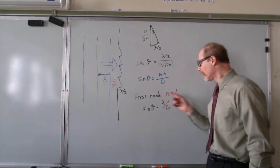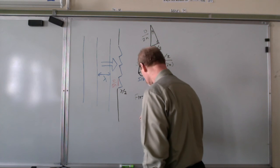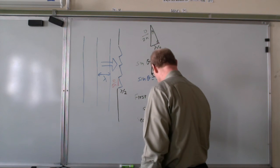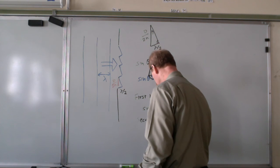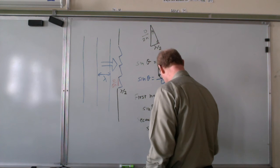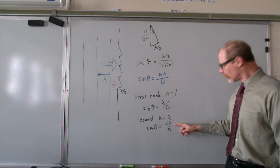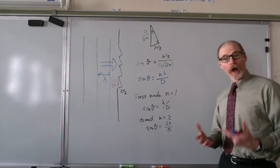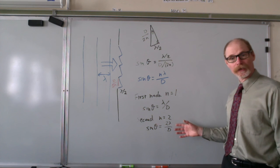What about the higher node? Say, n equals 2. Well, you're only going to get this when 2 lambda over d is 1 or less. For 2 lambda over d to be less than 1, then lambda has to be less than half the slit width.